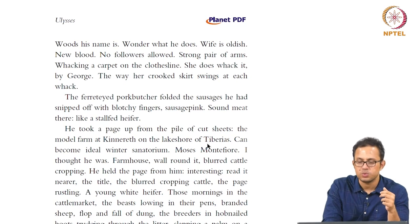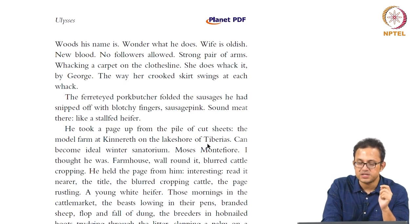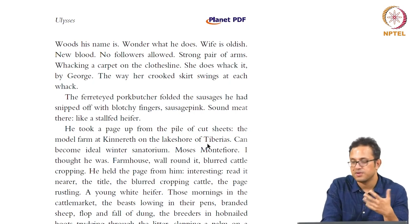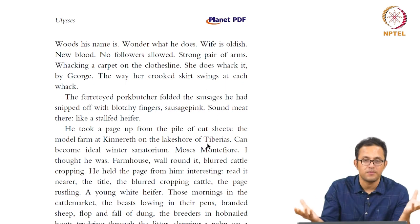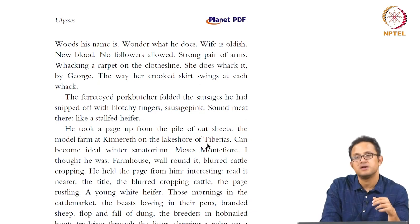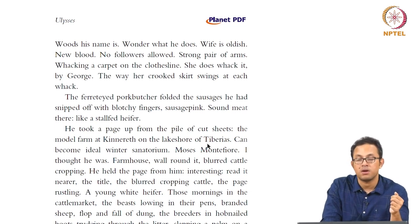Woods is the name of the butcher. 'Wonder what he does. Wife is oldest. New blood. No followers allowed. Strong pair of arms. Whacking her carpet on the clothesline.' The pock-butcher folded the sausages he had snipped off with blotchy fingers. 'Sausage pink, sound meat there like a stall-fed heifer.' The meat metaphor continues — it carries the function of consumption but also the function of deadness. Everything is dead. We have a series of corpses and carcasses around, which is also an extension of the corpse-like, sepulchral quality of Dublin — the dead quality of Dublin. Everyone seems to be dead, human bodies just pieces of flesh walking around like carcasses.